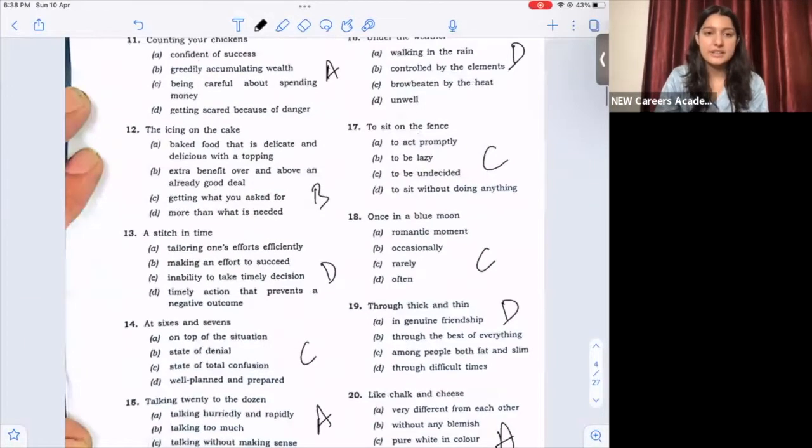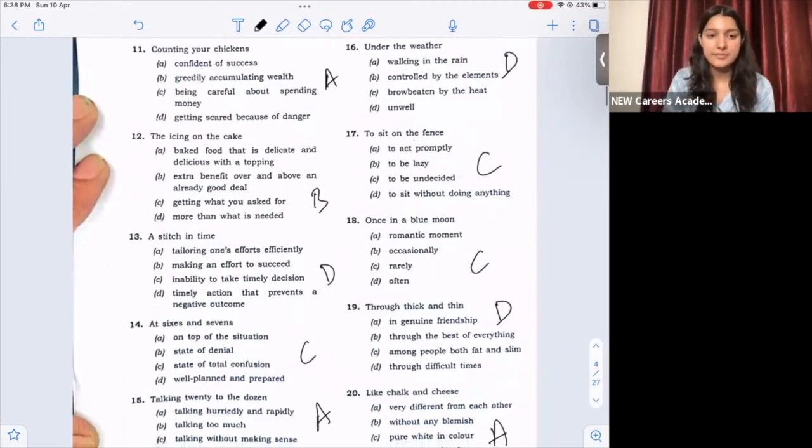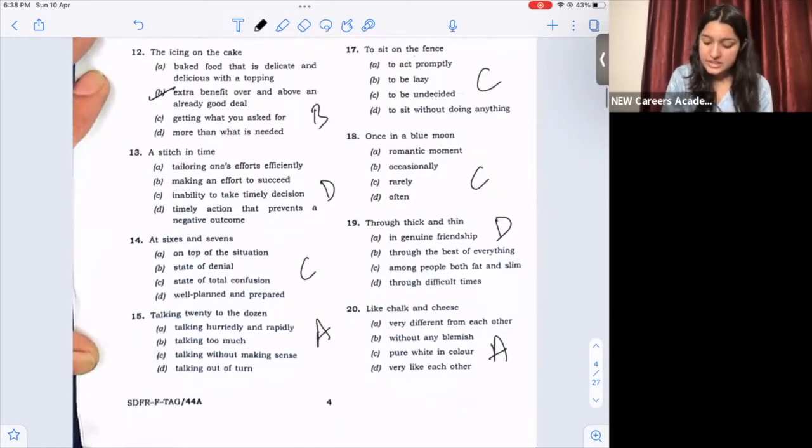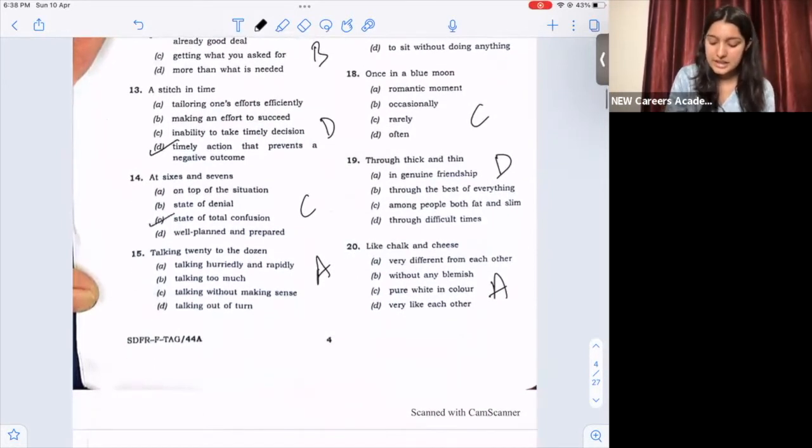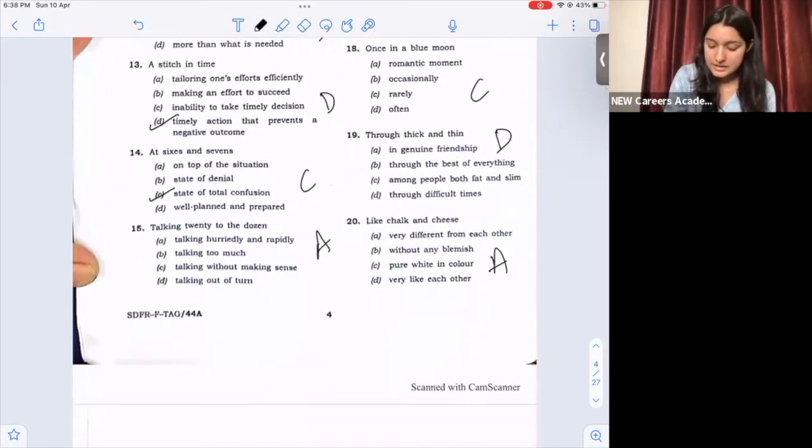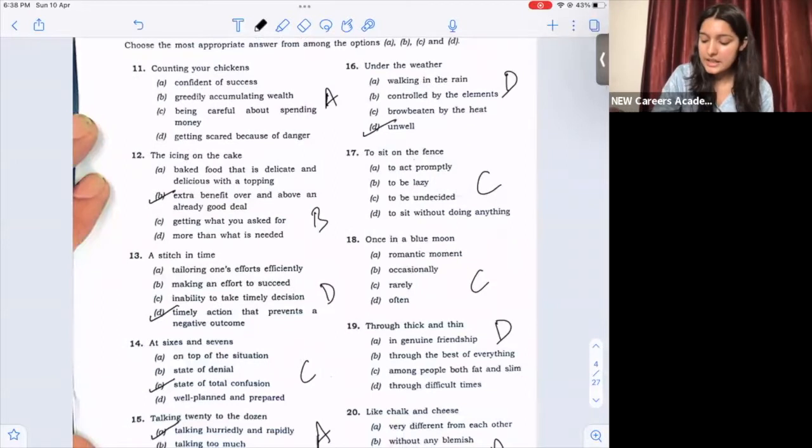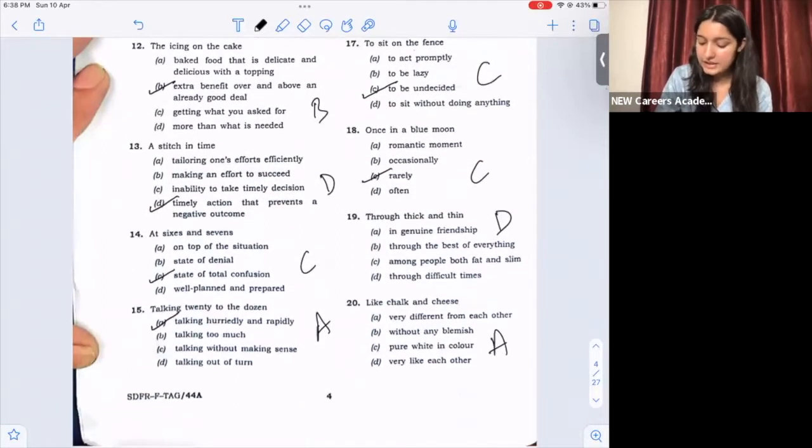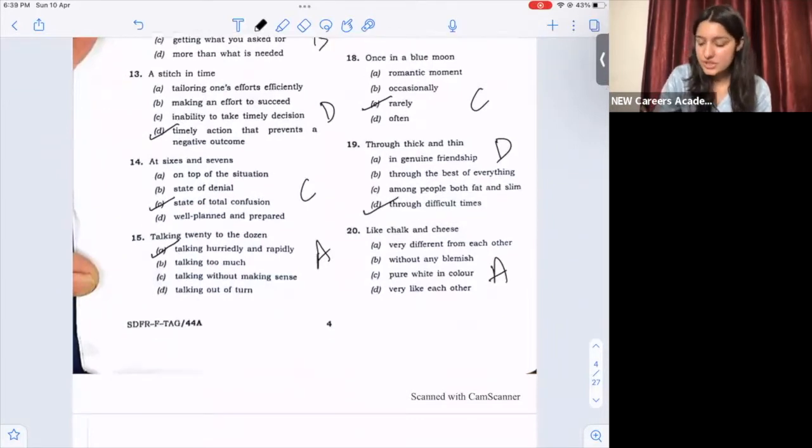Starting from question number 11, answer for question number 11 is option A. Question number 12, option B. 13th question, a stitch in time is option D. Question number 14, answer is option C. 15, answer option A. 16, answer is option D. 17, option C. Question number 18, answer is C. 19, option D. Question number 20, option A.